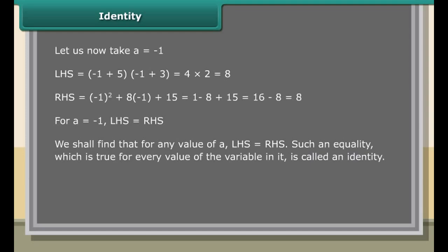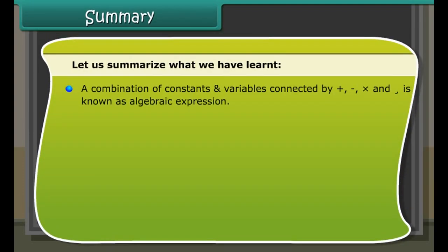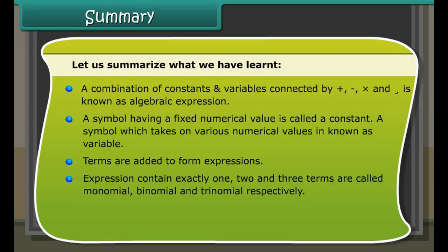Now let A = −1. LHS: (−1 + 5)(−1 + 3) = 4 × 2 = 8. RHS: (−1)² + 8(−1) + 15 = 1 − 8 + 15 = 8. For A = −1, LHS equals RHS. We find that for any value of A, LHS equals RHS. Such an equality which is true for every value of the variable is called an identity. Thus, (A + 5)(A + 3) = A² + 8A + 15 is an identity.